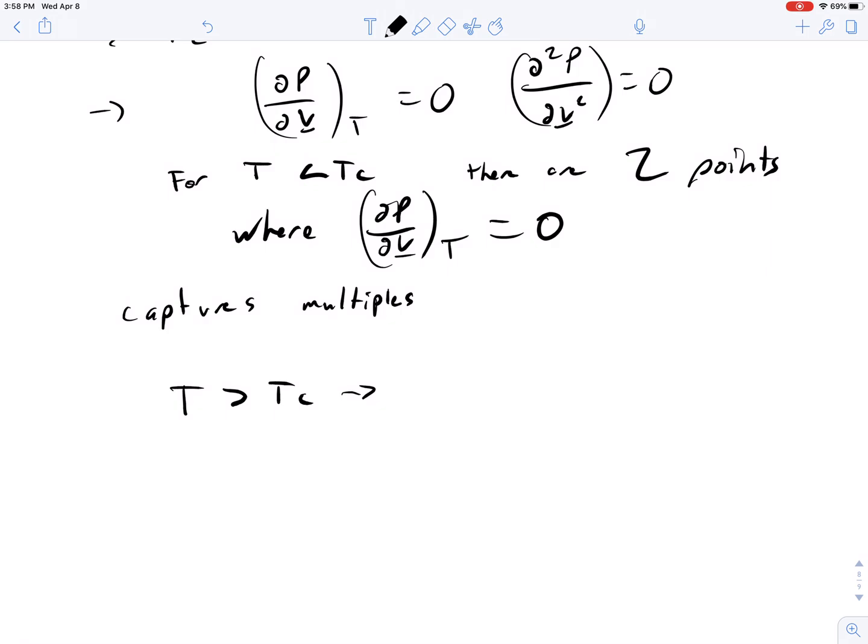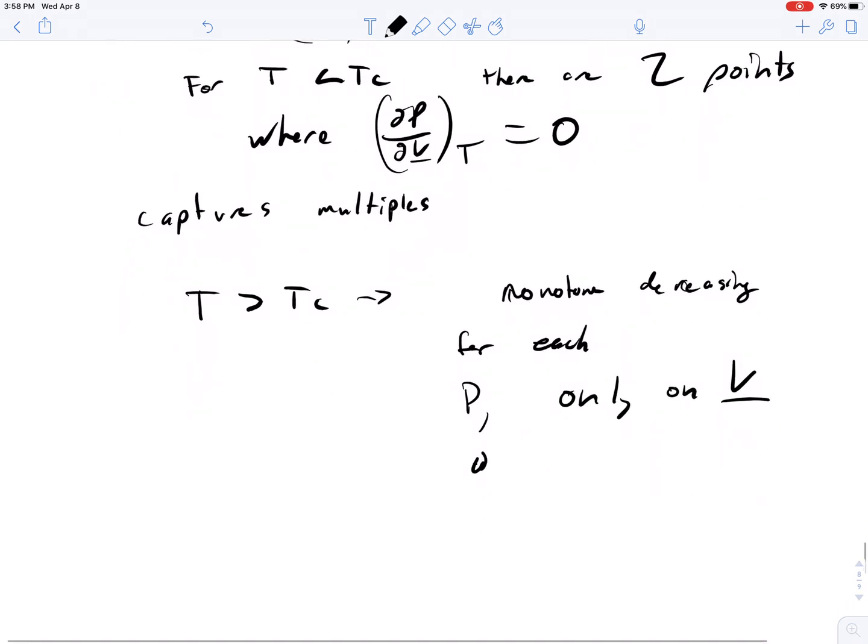So this is monotone decreasing, which means it's always decreasing. And for each pressure, only one volume at each isotherm.